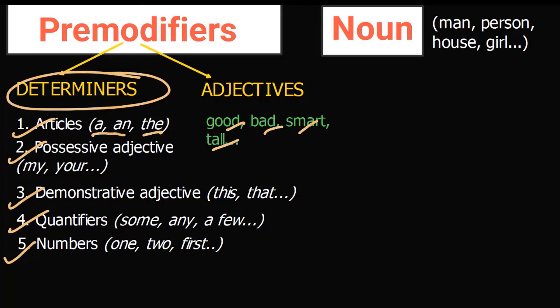An essential appositive does not use commas because the information is needed to identify the noun. Example: 'My friend Mangesh is working on a project' — without 'Mangesh' you wouldn't know which friend. 'Mangesh' is an essential appositive renaming 'my friend'. This is what an appositive phrase is — a noun phrase next to another noun providing either essential or non-essential identification.